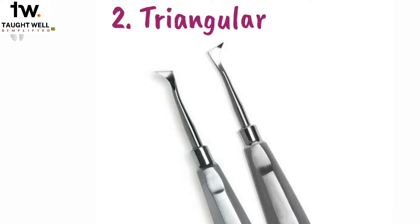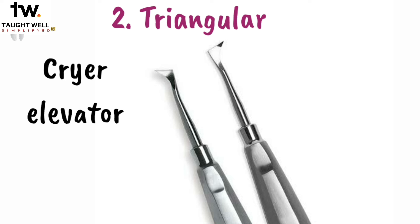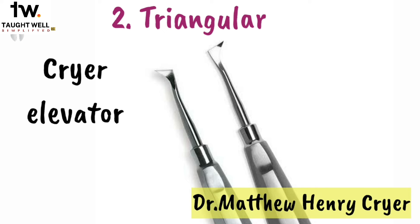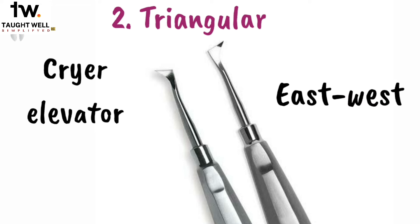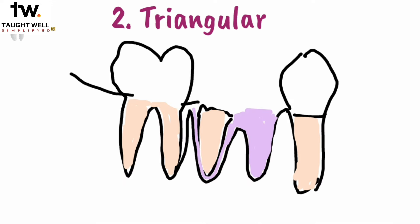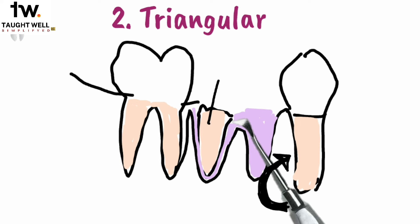After the straight elevator, the second most commonly used type is the triangular type. The Cryer elevator is a type of triangular elevator, named after oral surgeon Matthew Henry Cryer, who made many contributions to the development of surgical dentistry and was responsible for the greatly increased use of elevators. The blade is triangular and they always come in a pair — left and right. For example, if you extract a mandibular first molar but the distal root fractures and remains in the socket, the Cryer elevator is useful. We place the tip into the socket with the shank resting on the buccal plate of bone, then turn the elevator.